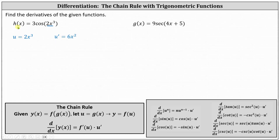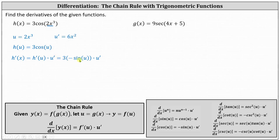We can now write h as a function of u as h of u equals 3 cosine u. This indicates h prime of x, applying the chain rule, is equal to h prime of u times u prime, where h prime of u is equal to the derivative of 3 cosine u with respect to u, which is 3 times negative sine u, and then times u prime. Now we're done with the calculus. We simply replace u with 2x cubed and u prime with 6x squared. Performing the substitution, we have h prime of x equals negative 3 sine of 2x cubed times 6x squared.